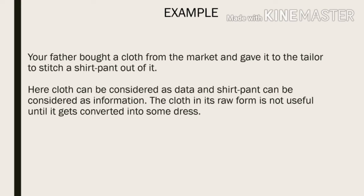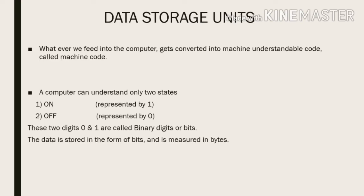Let's discuss one example. Your father bought a cloth from the market and gave it to the tailor to stitch a shirt and pant out of it. Here, cloth can be considered as data and shirt pant can be considered as information. The cloth in its raw form is not useful until it gets converted into some dress.